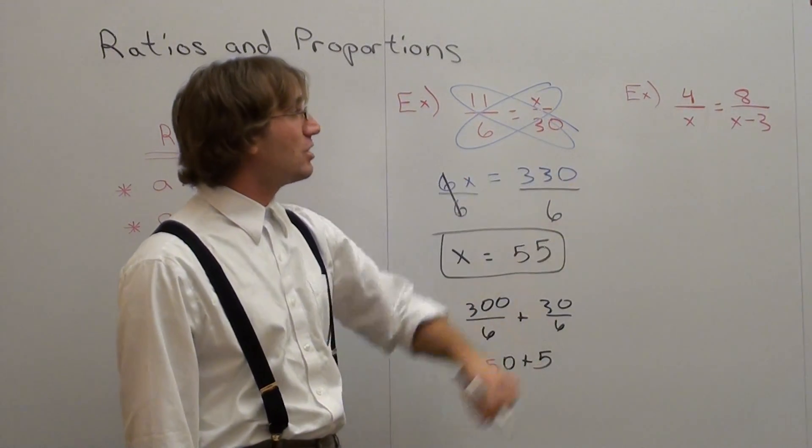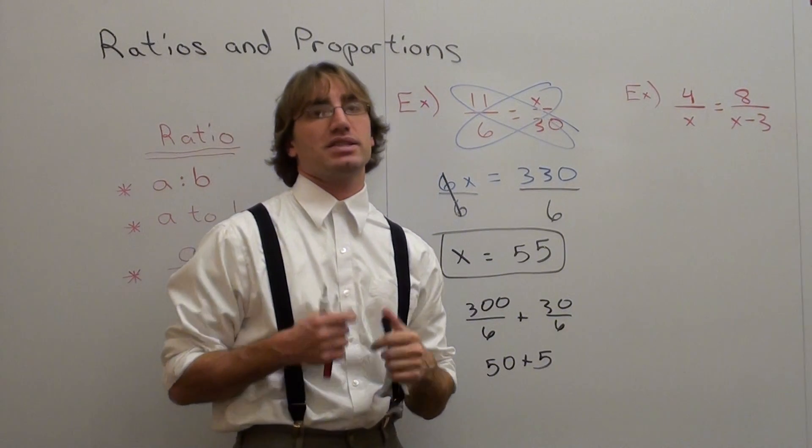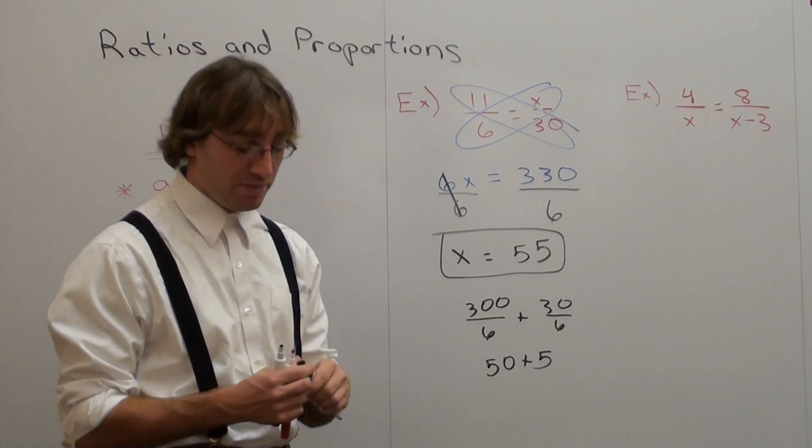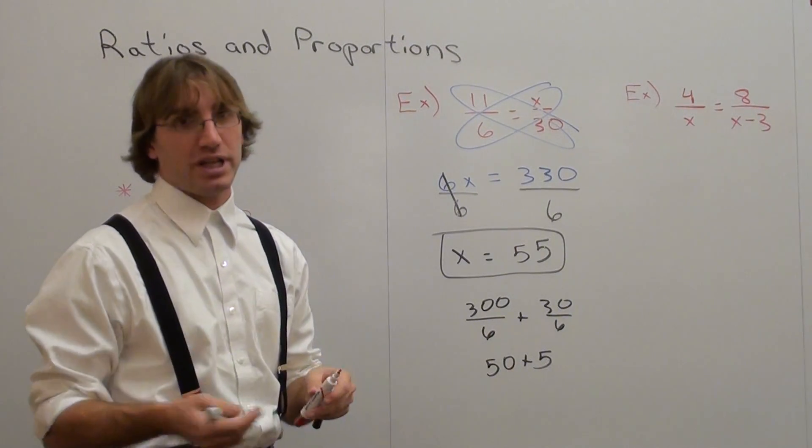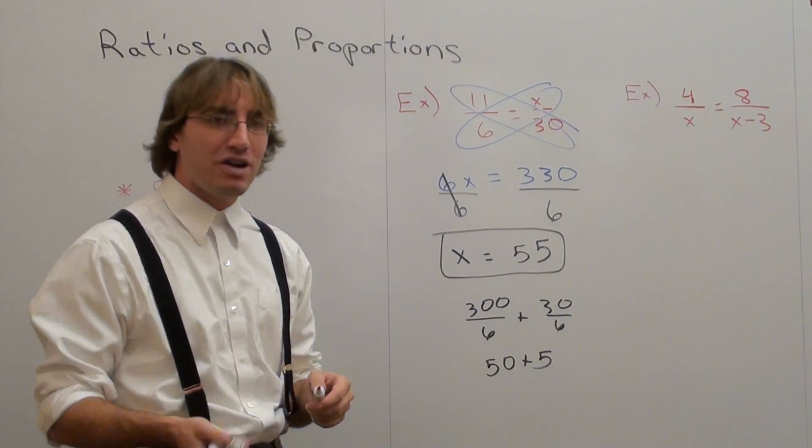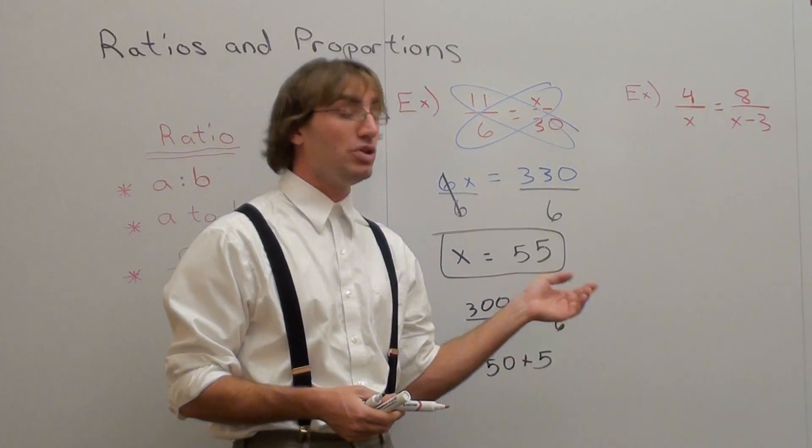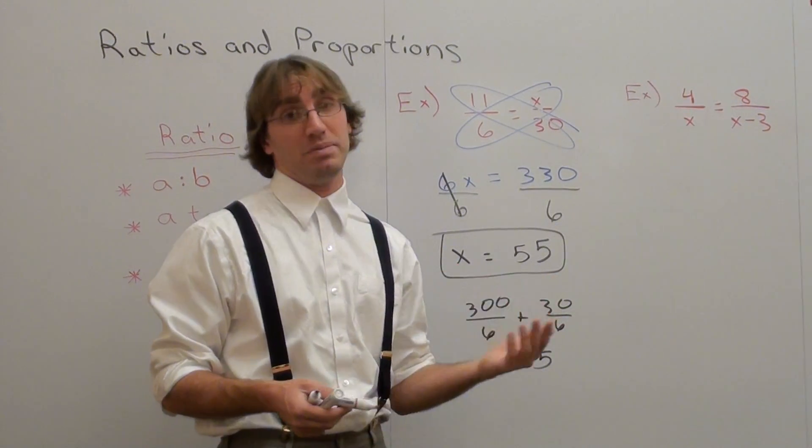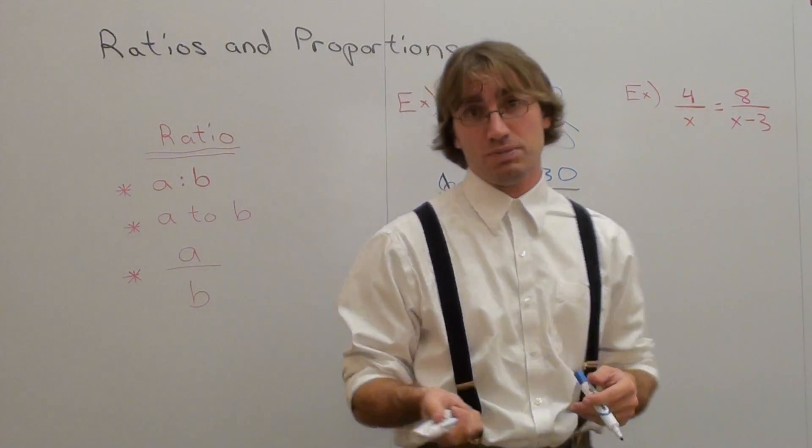Next one. 4 over x equals 3 over x minus 3. I like this one because it's the start of a new type of proportion problem, and it usually requires you to do a little bit more work. Initially, at least, when you practice it enough, or if it's a problem similar to it, you don't have to do as much work. But initially, when you do this problem, you'll probably mess up. So you want to show your work. And it's still cross-multiplying.